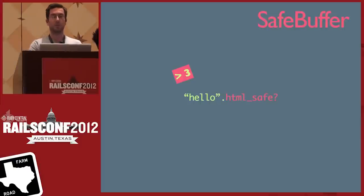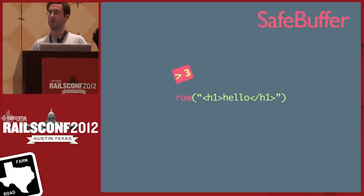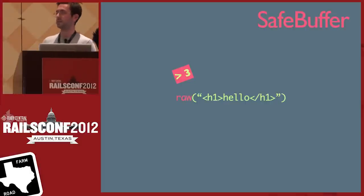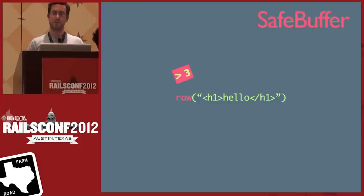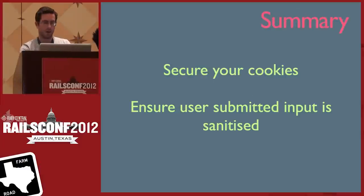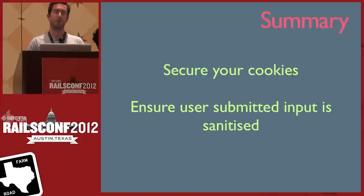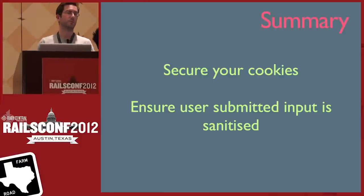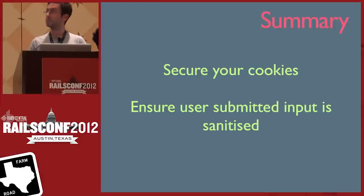If you want to display actual HTML on the page — like in an admin CMS — you can use the raw method, which marks the string as HTML safe so no further escaping happens. XSS summary: make sure your cookies are secure, especially the session cookie — you don't want it readable by JavaScript. And ensure any user-entered input is escaped before output. If you're using Rails 3 or above, this happens by default.